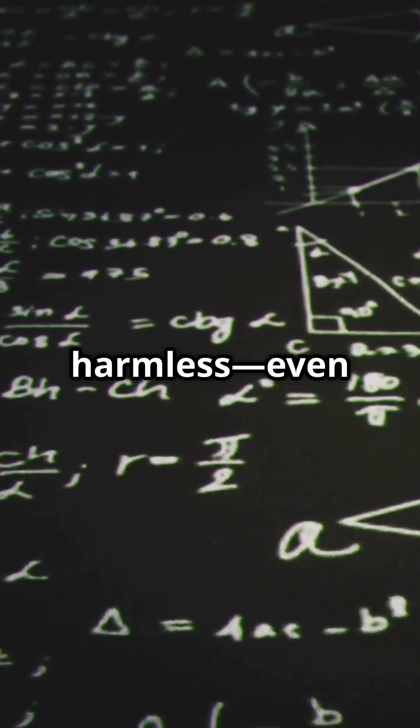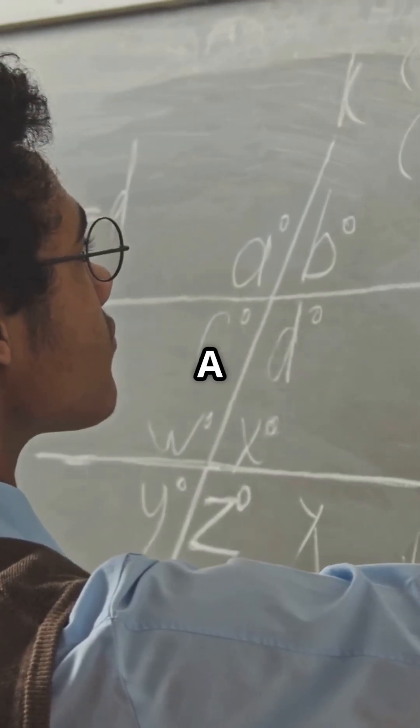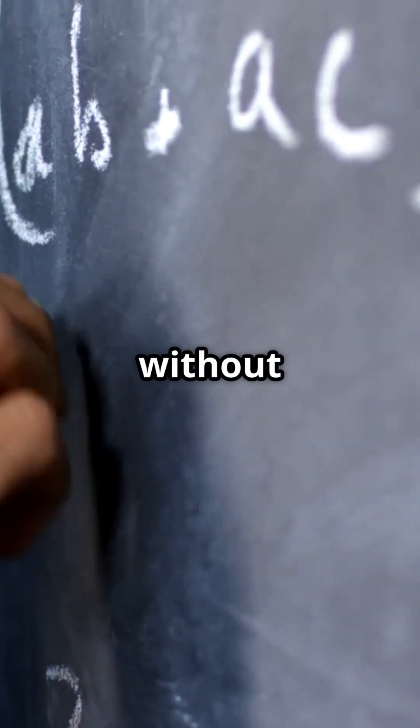It may seem harmless, even simple, but it's not. √2 is the first irrational number ever discovered. A number that cannot be expressed as a fraction, stretching out into infinity without ever repeating.